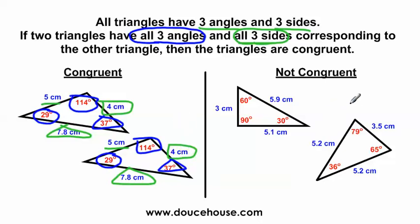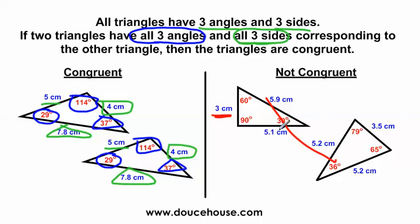Now these over here — I have two sets of triangles that are not congruent. If I look at this 3 centimeters, I don't see another 3 centimeters anywhere on the other triangle. So these two triangles are not congruent. If any one angle or one side does not have a matching corresponding angle or side on the other triangle, then it is automatically not a congruent triangle.